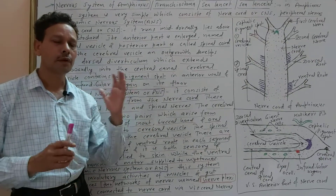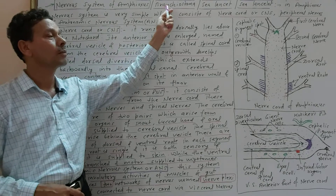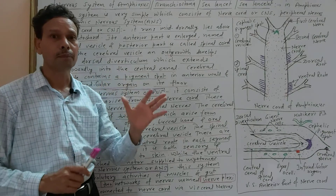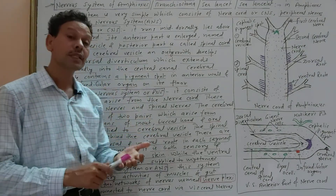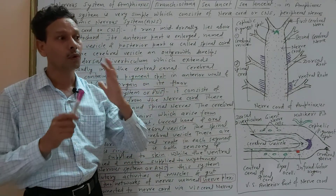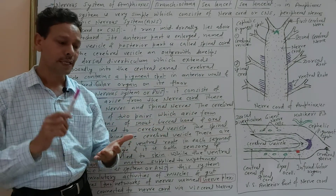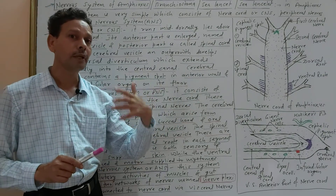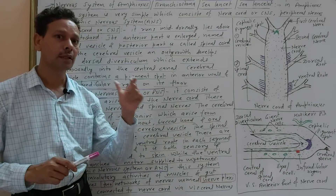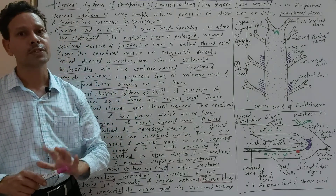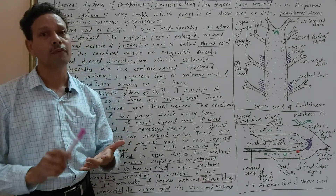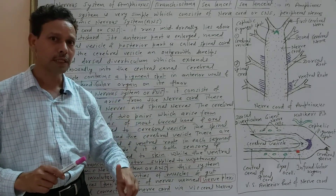Dear students, today we will discuss the nervous system of Amphioxus, Branchiostoma. We will discuss very important points. The nervous system of Amphioxus is a very simple type, and it is divided into three parts: the central nervous system (CNS) or nerve cord, the peripheral nervous system (PNS), and the autonomic nervous system (ANS). All three parts are present in the nervous system of Amphioxus.